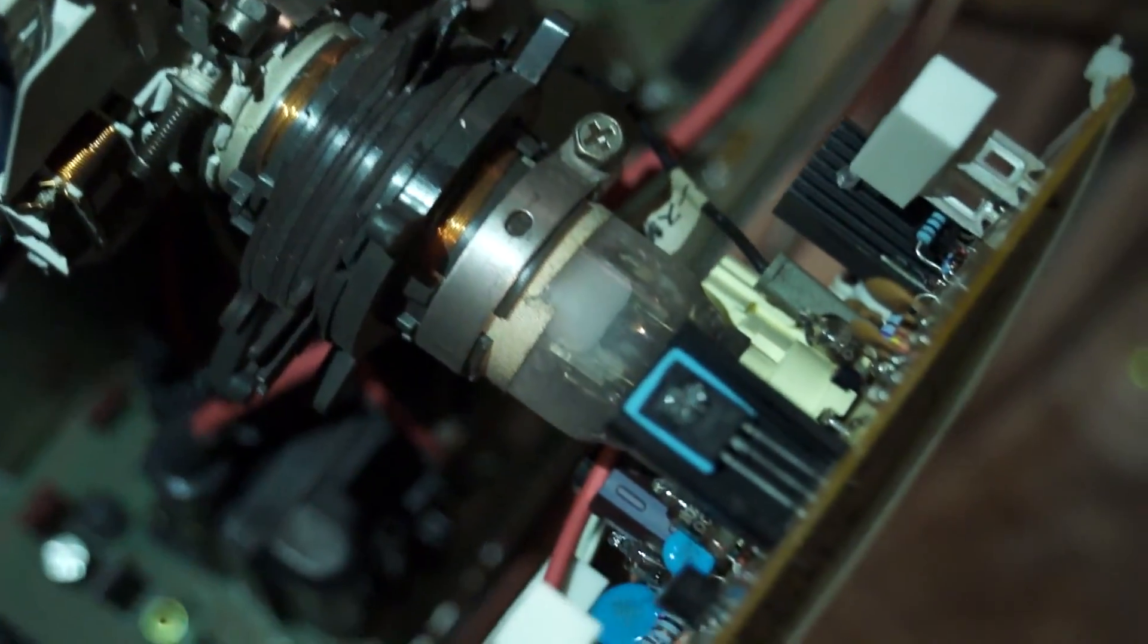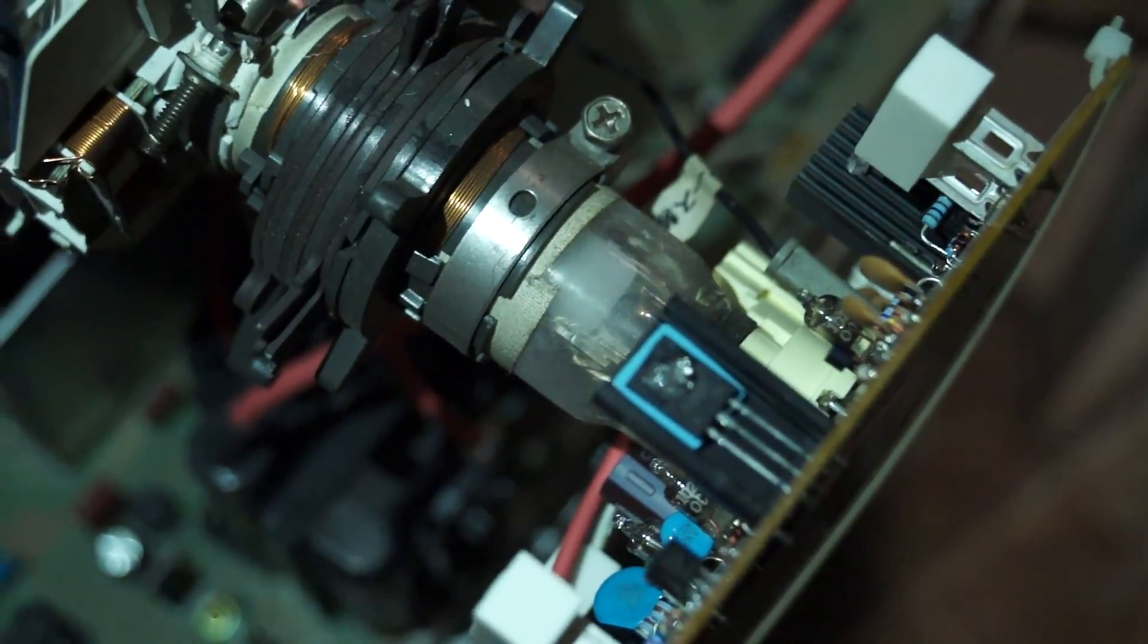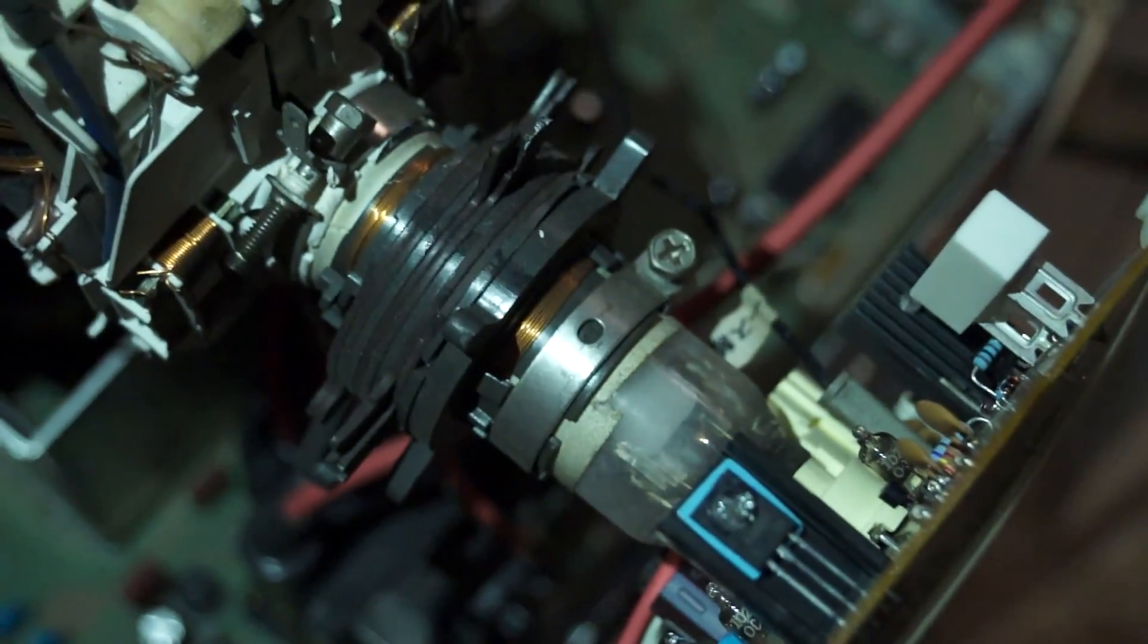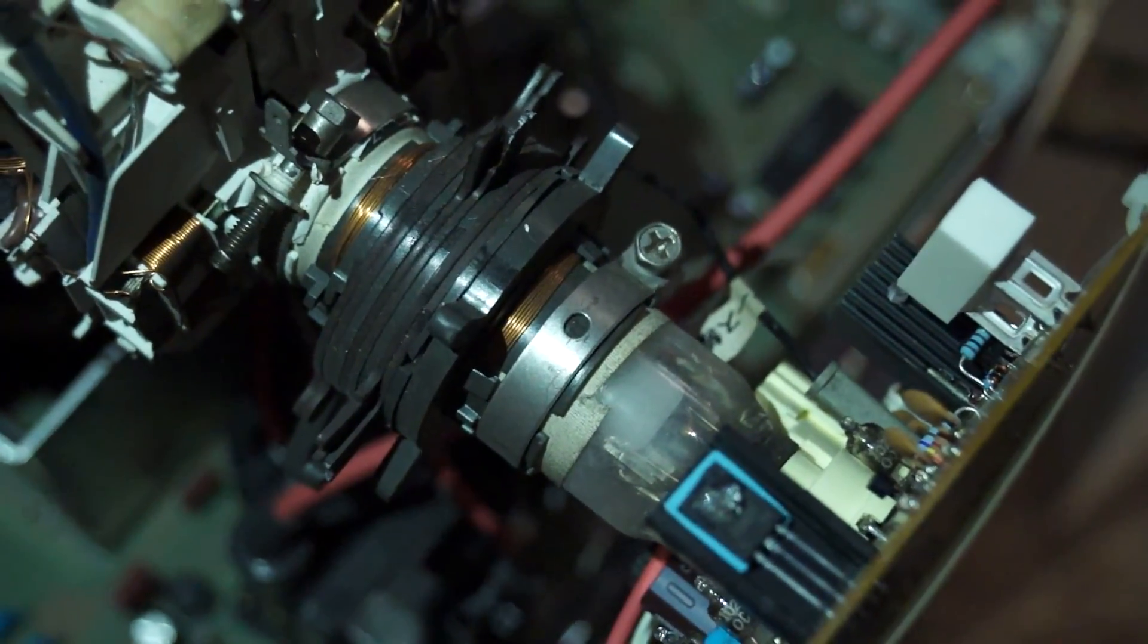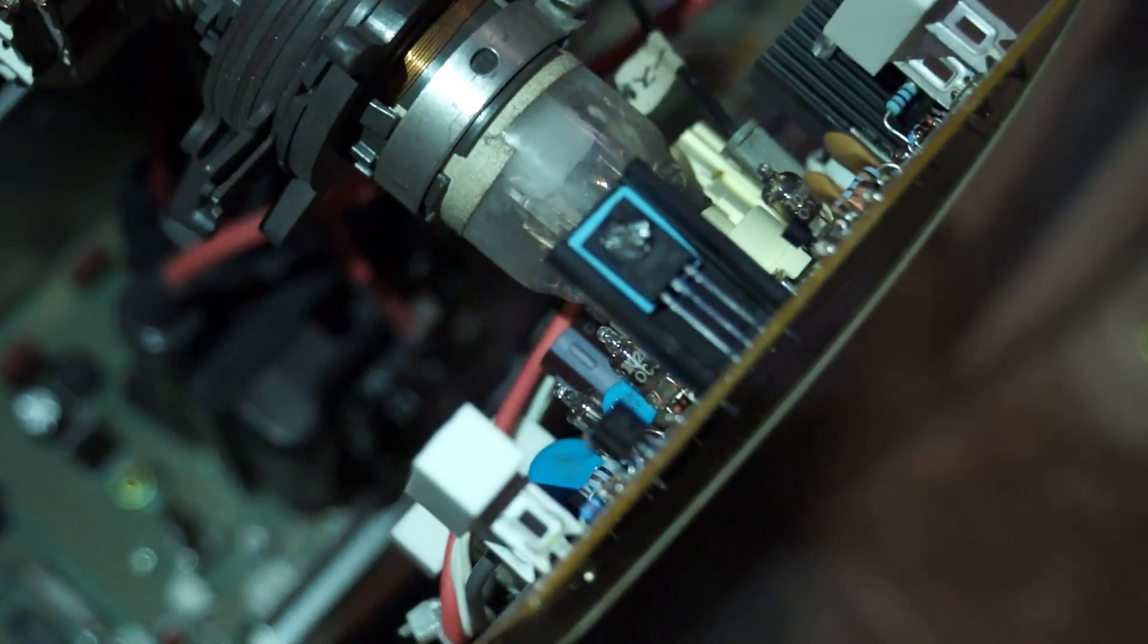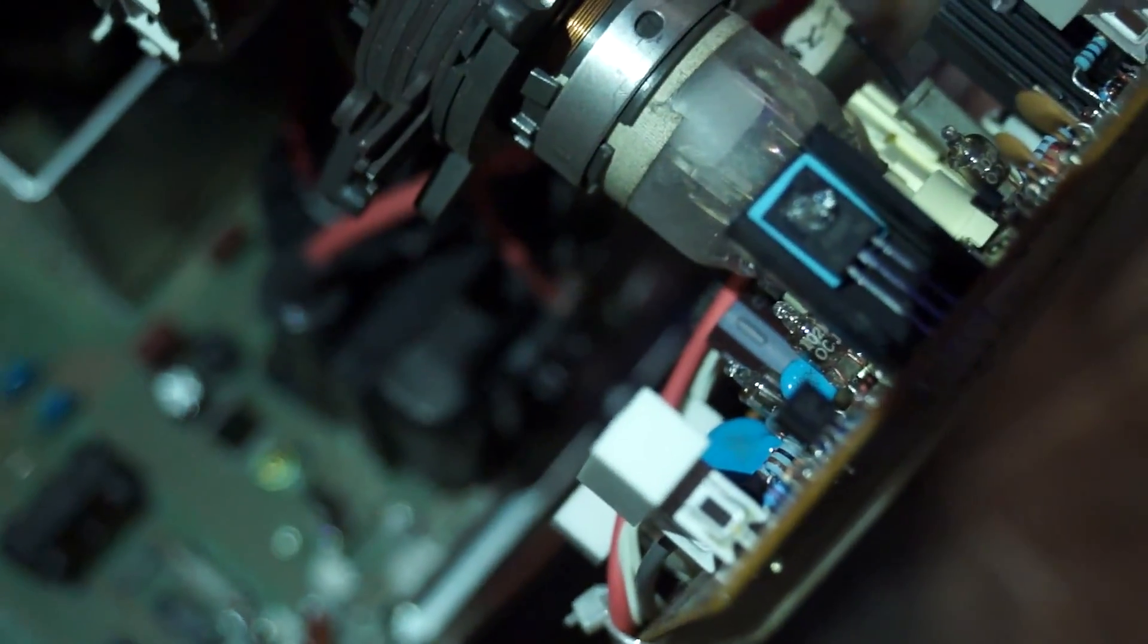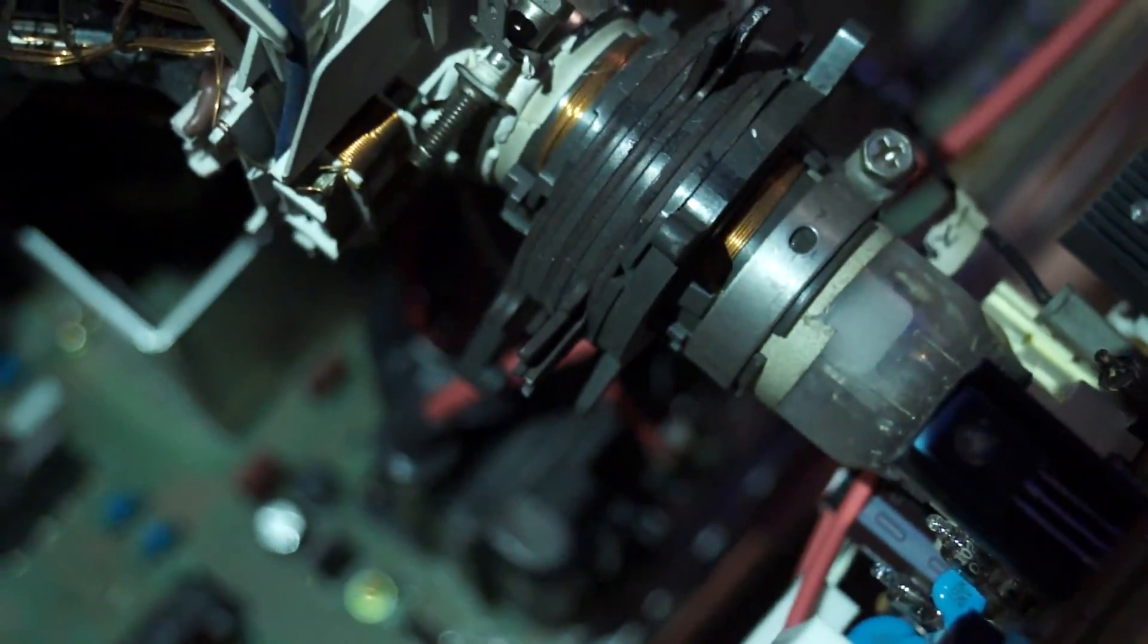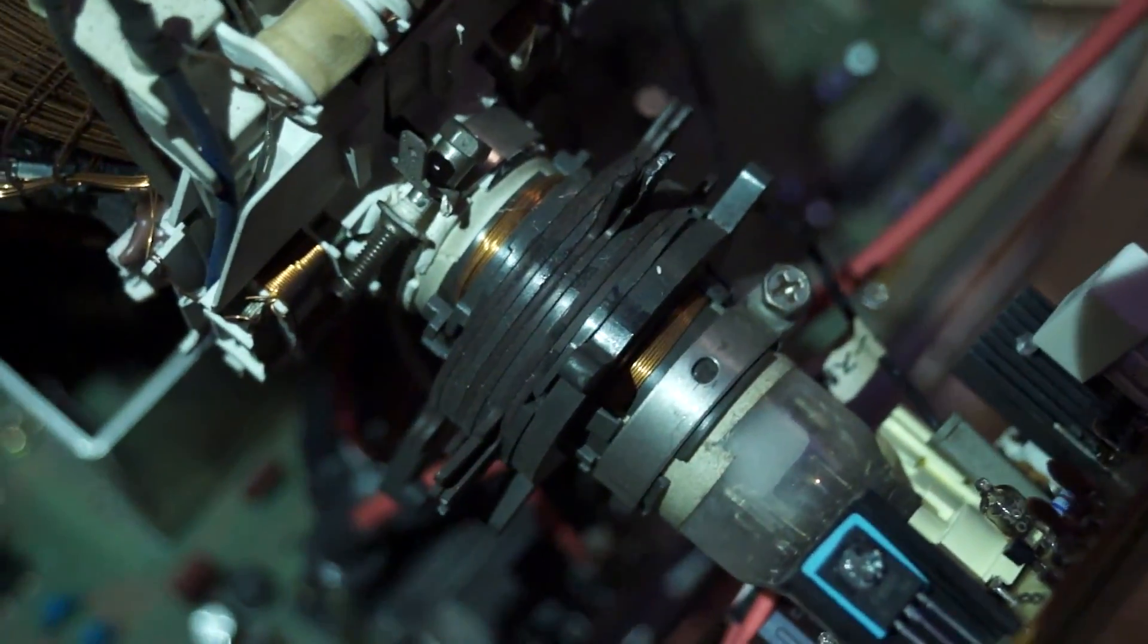Then the next set of rings, the next pair, is for your red and blue convergence. So you'll be able to adjust your red and blue to make sure that those two are in alignment.